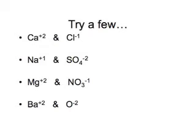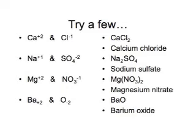Let's try a few of these — naming them and writing their formulas when you balance the charges. The plus two calcium has to have two chlorides to balance its positive two, so CaCl2. You have to have two sodiums for the one sulfate: Na2SO4. Magnesium needs two nitrates, so you have to use parentheses there. Barium and oxide balance out just fine, one to one.